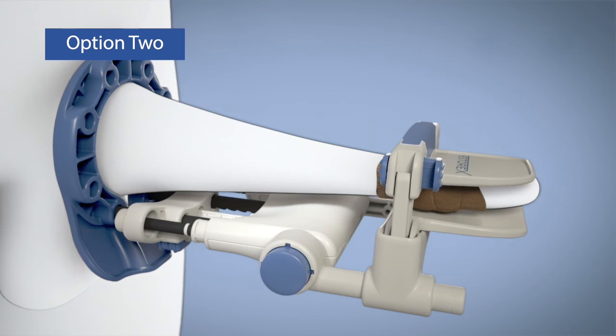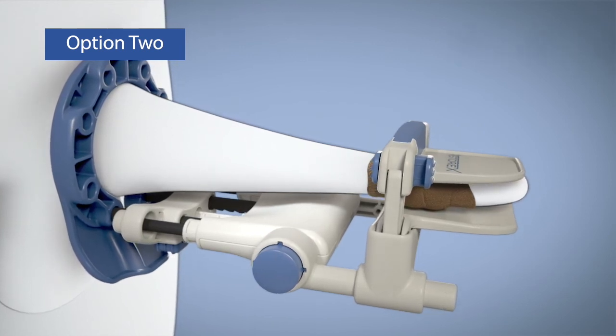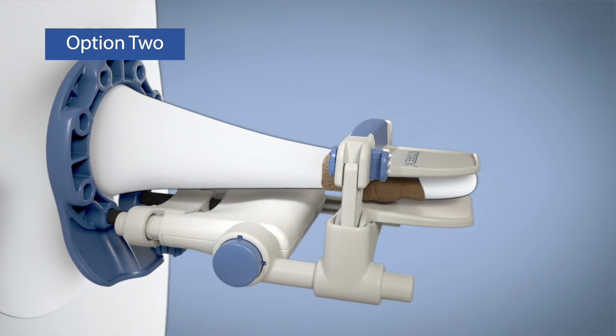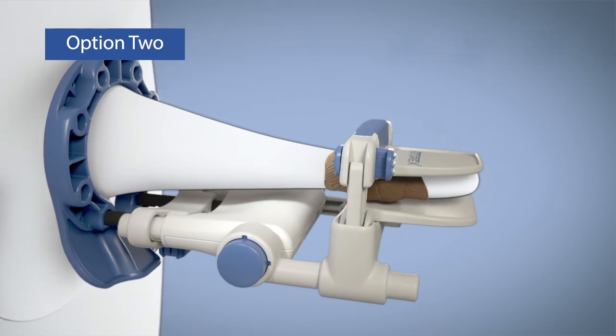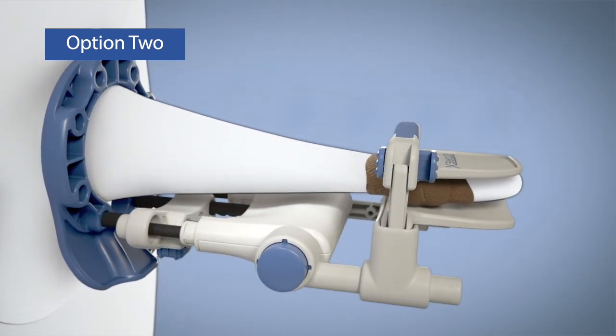If they do, relock the tension rods, advance one more notch on the extension rods, and release the lock on the tension rods once again. Repeat until the white bands do not show.